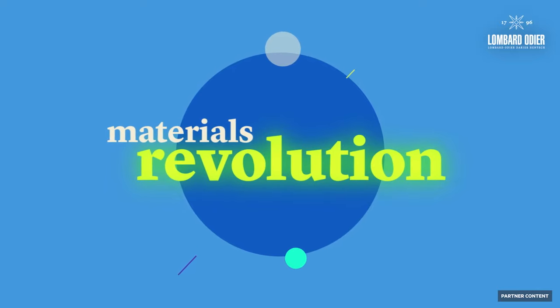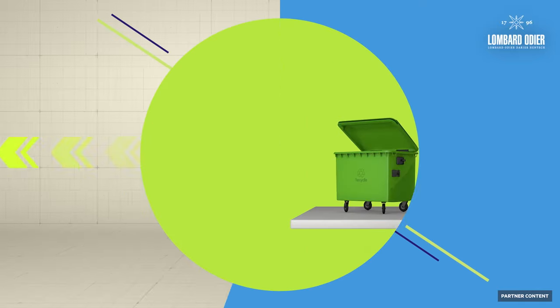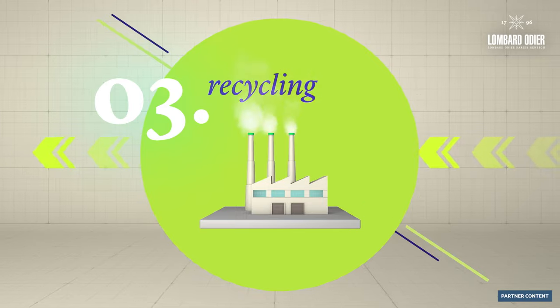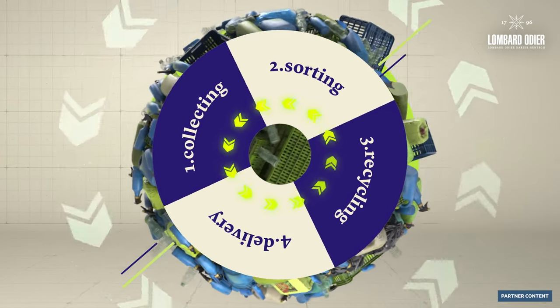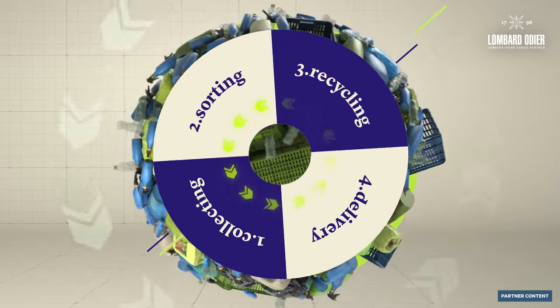A materials revolution needs to happen. Better materials, collecting, sorting, recycling, delivery. Only if all elements are improved can we have a truly circular system.